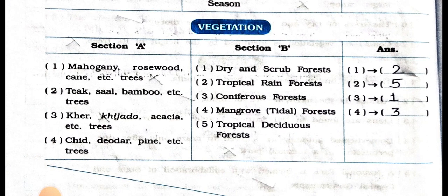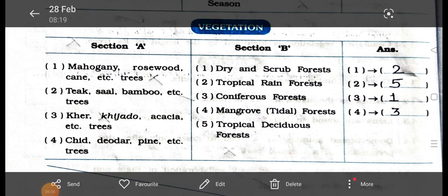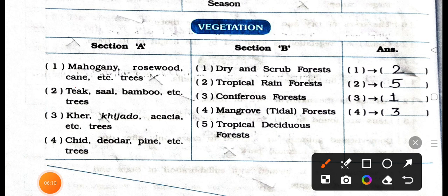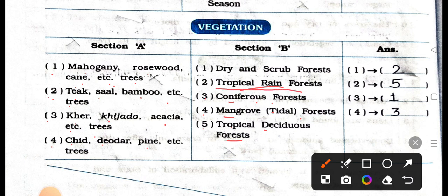See the match the column of vegetation. Section A: number 1, mahogany, rosewood, cane, etc. trees; number 2, teak, sal, bamboo, etc. trees; number 3, kher, khejado, acacia, etc. trees; number 4, chir, deodar, pine, etc. trees. Section B: number 1 dry and scrub forest, number 2 tropical rainforest, number 3 coniferous forest, number 4 mangrove tidal forest, number 5 tropical deciduous forest. Answers: mahogany, rosewood, cane matches tropical rainforest; teak, sal, bamboo matches tropical deciduous forest; kher, khejado, acacia matches dry and scrub forest; chir, deodar, pine matches coniferous forest.